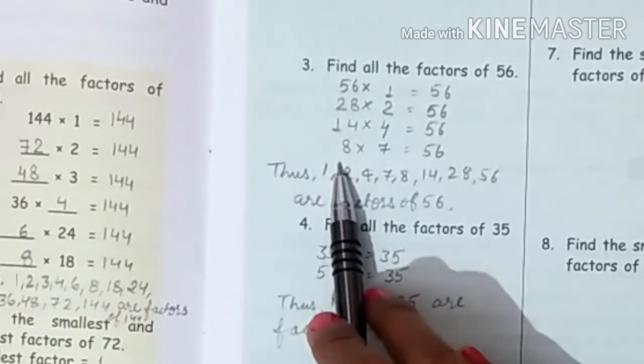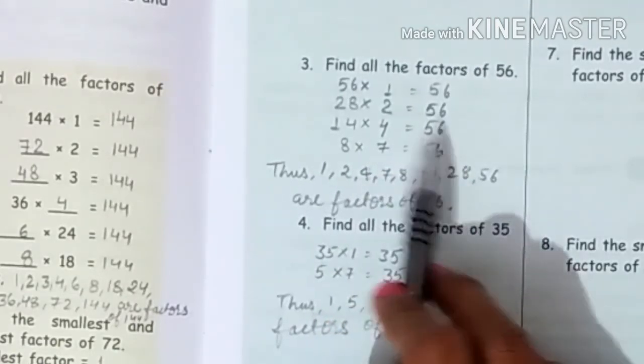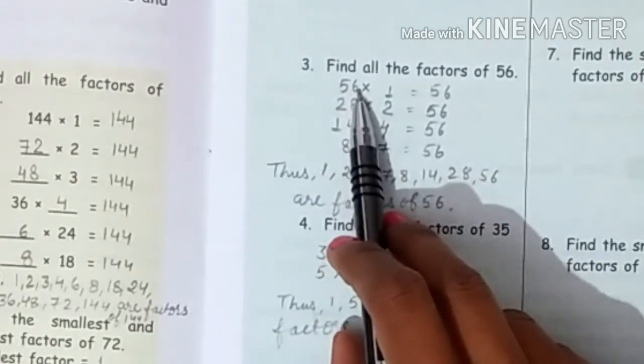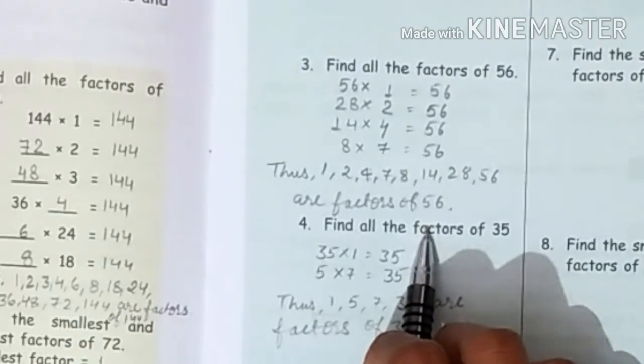And 7 table is also 8 times, or 8 table is also 7 times. 8 times 7 is 56. So 1, 2, 4, 7, 8, 14, 28, and 56 are factors of 56.